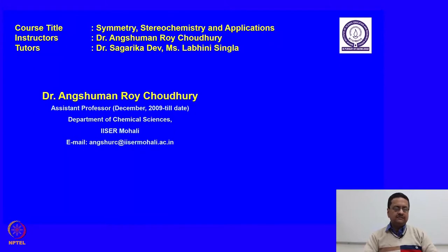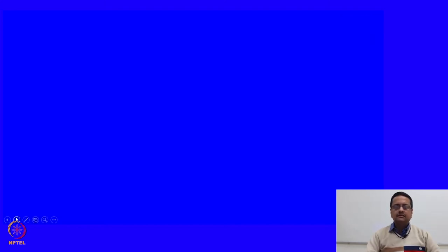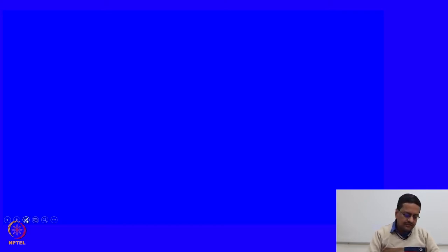Welcome back to the course entitled Symmetry, Stereochemistry and Applications. In the previous lectures we have discussed about various isomerisms and learnt about different types of projection formulas. In today's lecture I would like to concentrate on how you can interconvert one type of projection formula to another. Let us start the discussion by drawing different types of projections for a tetrahedral carbon centre, beginning with methane.